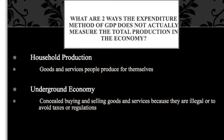As far as measuring the production in the economy — its actual intent — there are two issues we might want to be aware of. One is household production and one is the underground economy. Household production refers to the fact that GDP covers the market value of goods and services produced for the marketplace, so it omits productive activities that would be included in GDP if you paid somebody to do them, but if you do it yourself, we don't include it.